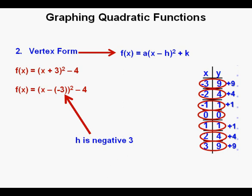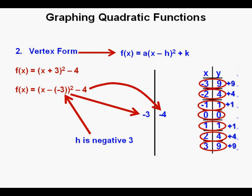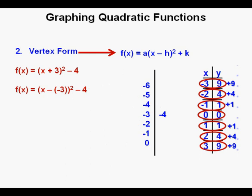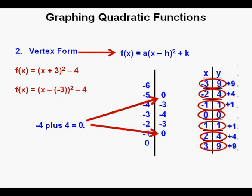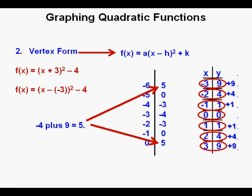In order for it to be x minus h, the h in the equation must be negative 3. So we use these numbers representing h and k to give us our vertex at x equals negative 3 and y equals negative 4. We place three input values on either side of the vertex: negative 2, negative 1, and 0 below, and negative 4, negative 5, and negative 6 above. Following the quadratic pattern, we add 1 to negative 4, giving negative 3. Then negative 4 plus 4 gives 0. Continuing, negative 4 plus 9 equals 5.